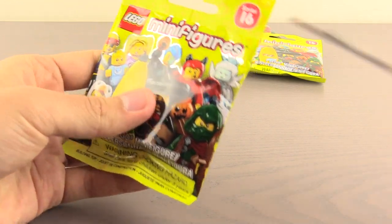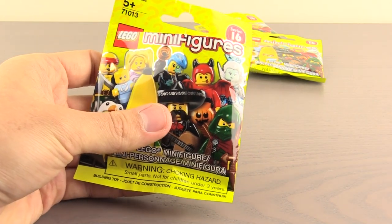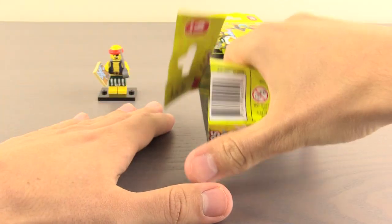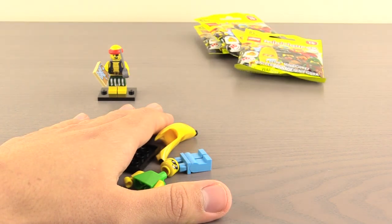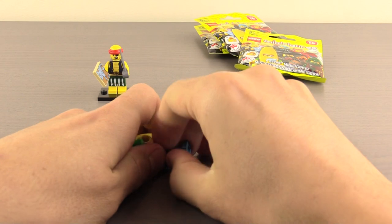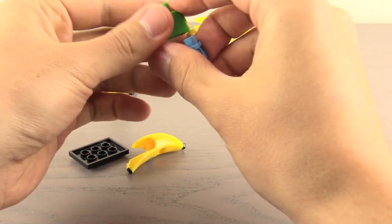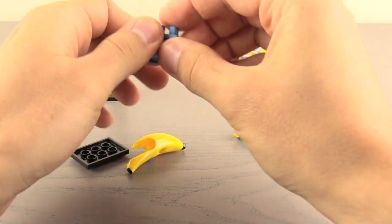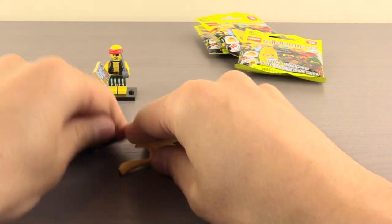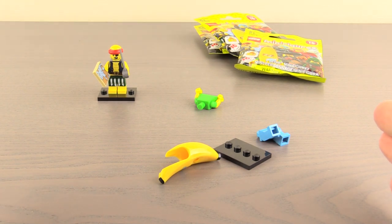Here we go. Bag number two. Let's see what we got. This one feels a lot bigger. I'm going to go ahead and grab that, set that aside. And I'm going to close my eyes. I think that is all. Let's see what we have. I got a hold of a bunch of stuff. That's the head. That is the torso. Those are legs. We have the base. Please tell me that this is the banana kid or the banana guy. Three, two, one. Yes!